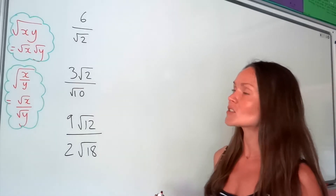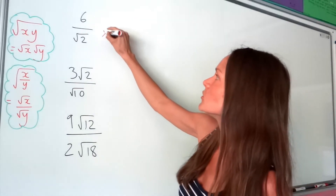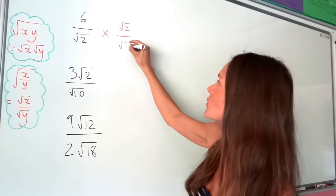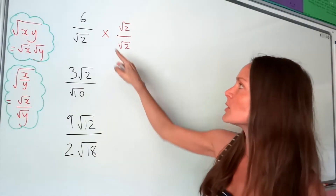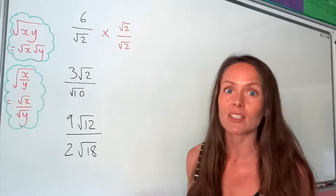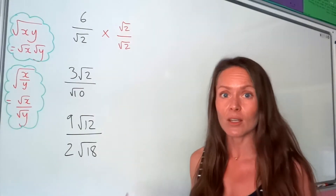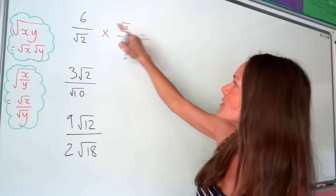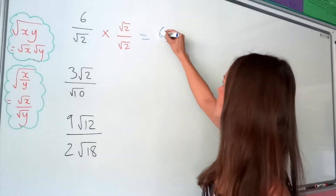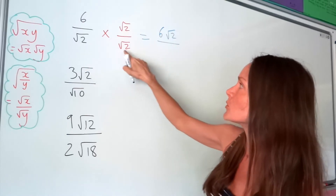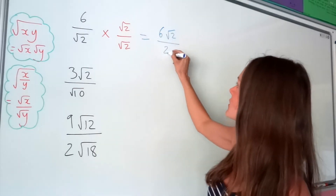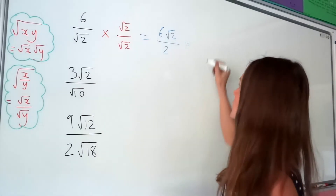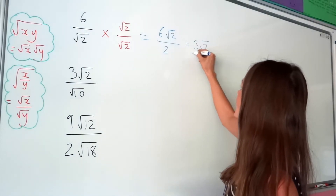In the first example, to get rid of the square root in the denominator, we multiply by √2 on the top and also on the bottom. Root 2 over root 2 is just 1, so we're just multiplying this fraction by 1 — we're finding an equivalent fraction to rationalise the denominator. On the top, 6 times √2 is 6√2. Underneath, √2 times √2 is 2. So we simplify: 6 divided by 2 is 3, giving a final answer of 3√2.